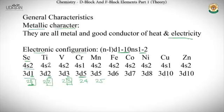There are two exceptions to this trick: Cr and Cu. Both have a 4s¹ configuration instead of 4s². This is due to the extra stability of half-filled and completely filled orbitals — Cr achieves a half-filled d⁵ and Cu achieves a completely filled d¹⁰ configuration.